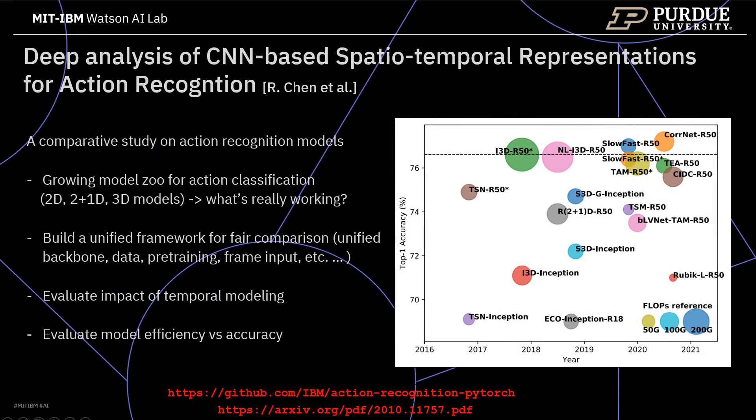We have seen an ever-growing model zoom for action classification over the last years. This includes 2D convolutional models, 2+1D, and 3D models. But the question is, which of those are really working? This is why we did a comparative study on action recognition models. To this end, we built a unified framework for fair comparison of those models. We unified the backbone, the training data, the pre-trained model, frame input, etc. The main focus is on the evaluation of the impact of temporal modeling, as well as on the trade-off of efficiency and accuracy of those models. The code for this framework is available on GitHub and the paper is available on Archive.